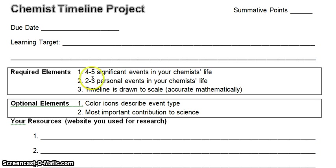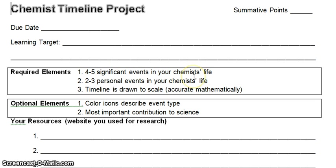So what are you looking for? You are looking for four to five significant events in your chemist's life. These would be events that have to do with their actual chemistry career — it could include school, graduation, degrees, jobs, people they've worked with, discoveries, or awards. All of those kinds of things count as significant events in the chemist's life.